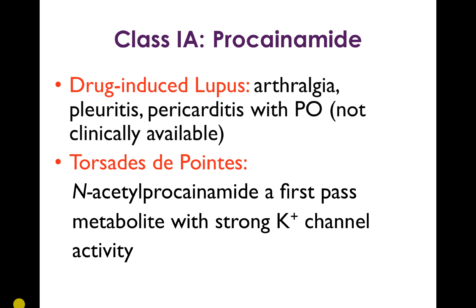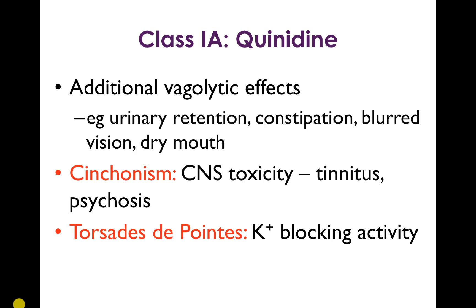The side effects are really important to know how to use the drugs clinically, and we'll lump together the uses of all drugs across classes at the end. The next class 1a drug is quinidine, which has vagolytic effects in addition to its sodium channel effects. These vagolytic properties cause side effects including urinary retention, constipation, blurry vision, and dry mouth. Cinchonism is a specific CNS toxicity seen in quinidine overdose, presenting with tinnitus and psychosis. Like all class 1a drugs, quinidine can cause torsades due to QT prolongation.